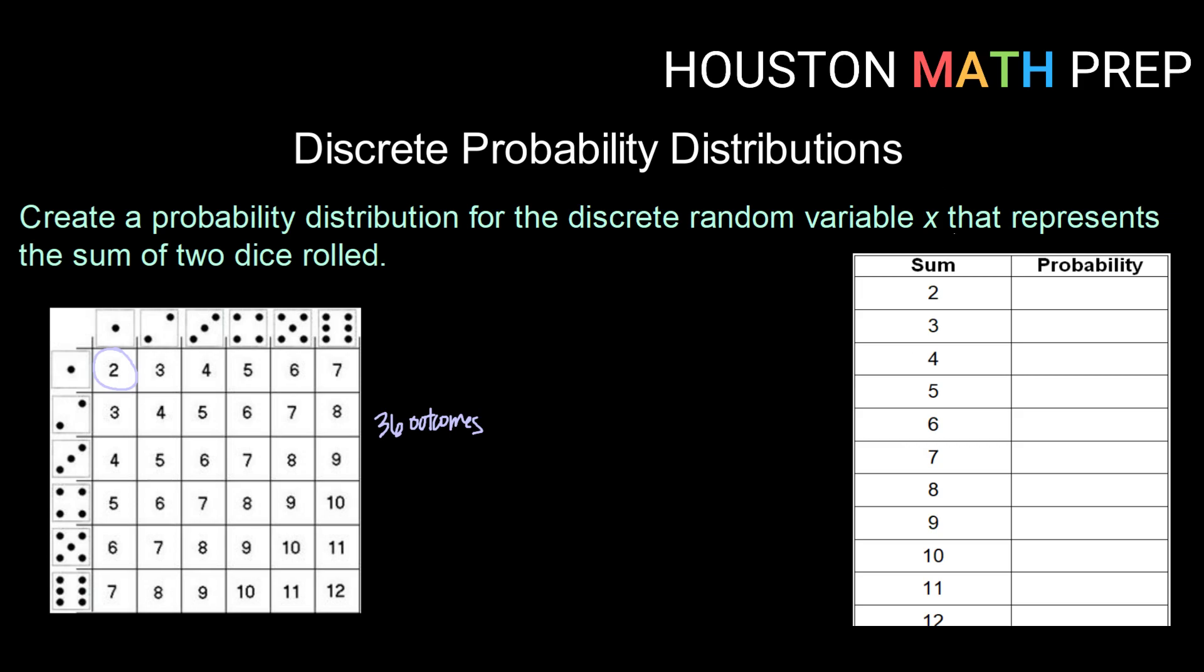So here we have our list of possible outcomes or our possible sums. Now we want to fill in the associated probability. So how many of those 36 possible outcomes give me a sum of 2? Well, I can see that there's only 1. So my probability there would be 1 out of 36.